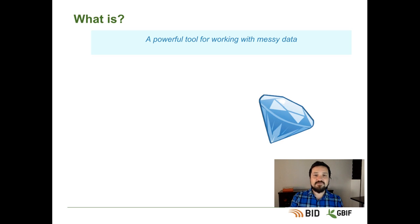It has three main features that allow us to do that. First, Faceting. Facet allows you to get useful insights into your dataset. Think of this as various ways to look at your data, creating several subsets that allow you to display only rows corresponding to a given criterion.